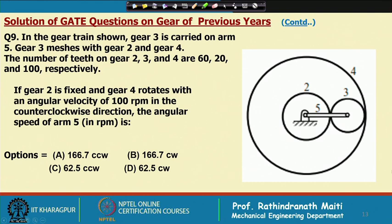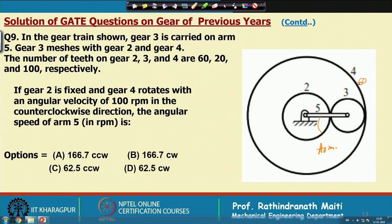The next question involves a gear train where gear 3 is carried on arm 5. Gear 3 meshes with gear 2 and gear 4 (the ring gear). The number of teeth on gear 2, 3, and 4 are 60, 20, and 100 respectively.